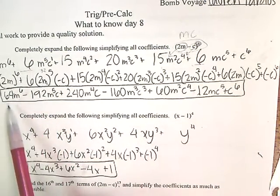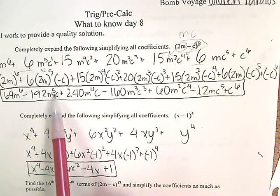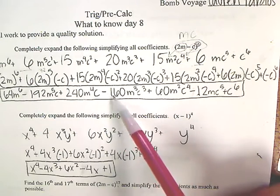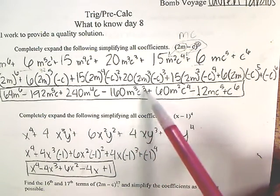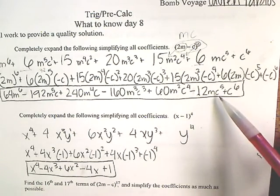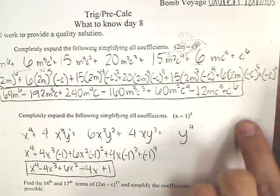So we end up getting 64m to the 6th minus 192m to the 5th c plus 240m to the 4th c minus 160m to the 3rd c to the 3rd plus 60m squared c to the 4th minus 12m c to the 5th plus c to the 6th. Thank you.